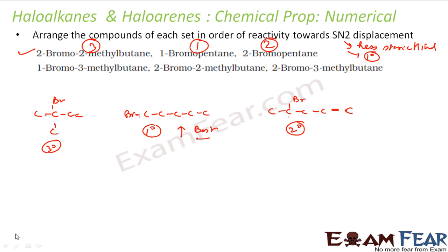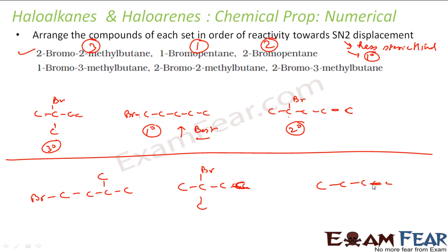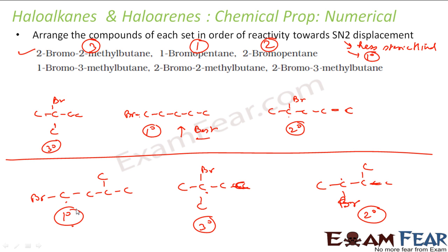Next set: 1-bromo-3-methylbutane, 2-bromo-2-methylbutane, and 2-bromo-3-methylbutane. Looking at the carbon bearing the halogen — 1-bromo-3-methylbutane is 1°, 2-bromo-3-methylbutane is 2°, and 2-bromo-2-methylbutane is 3°. Since 1° is best for SN2, the order is: 1-bromo-3-methylbutane (1st) > 2-bromo-3-methylbutane (2nd) > 2-bromo-2-methylbutane (3rd).